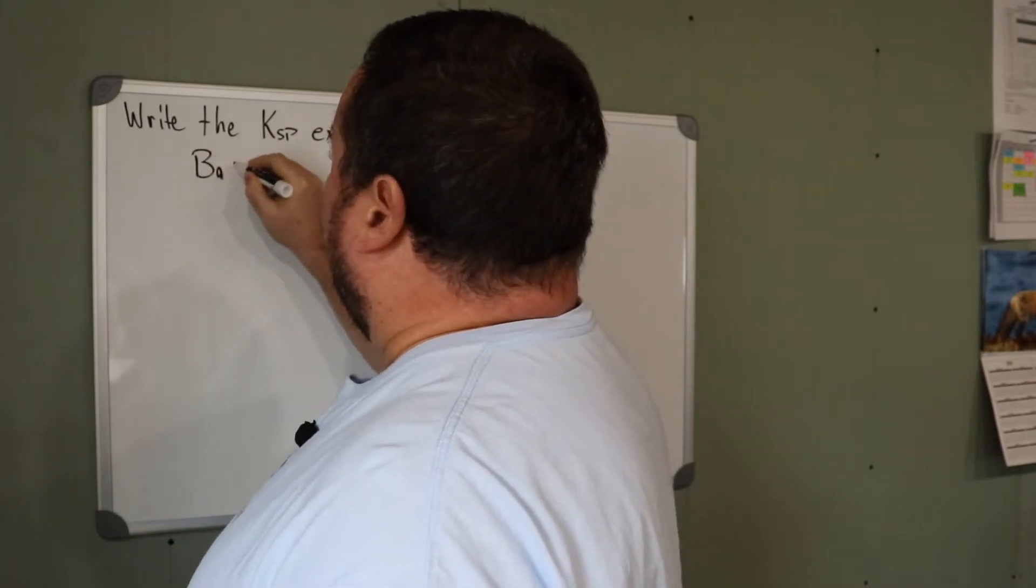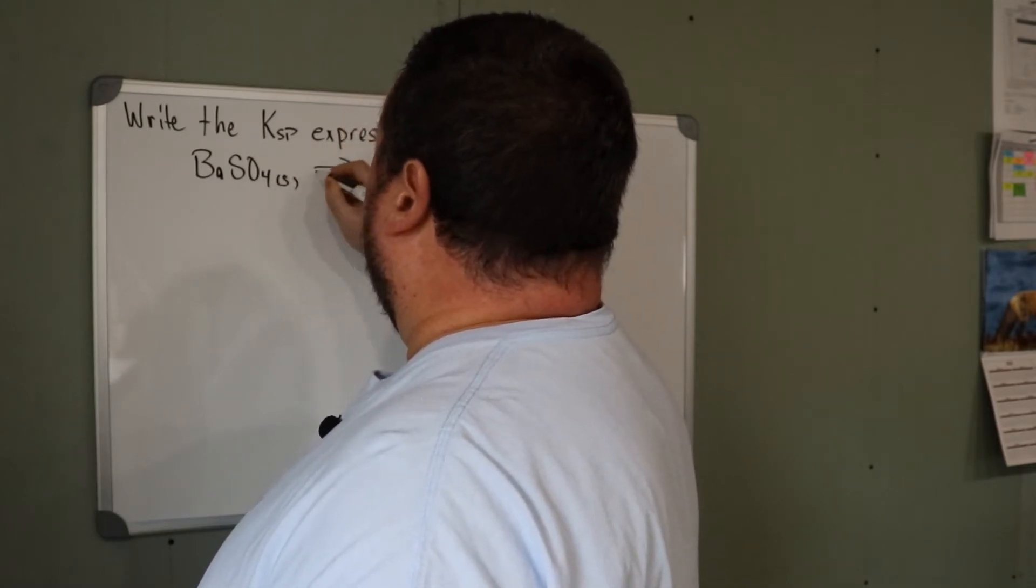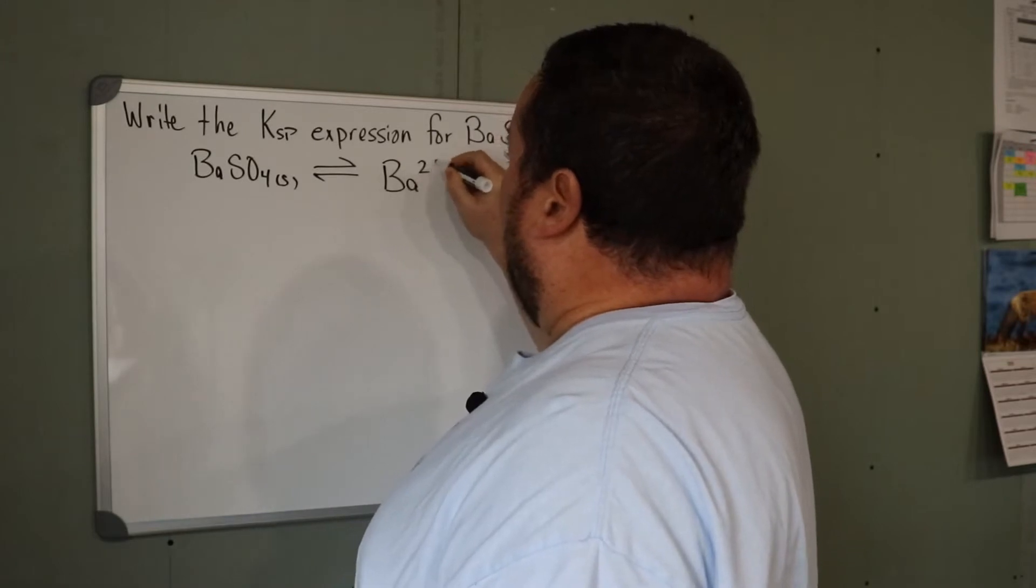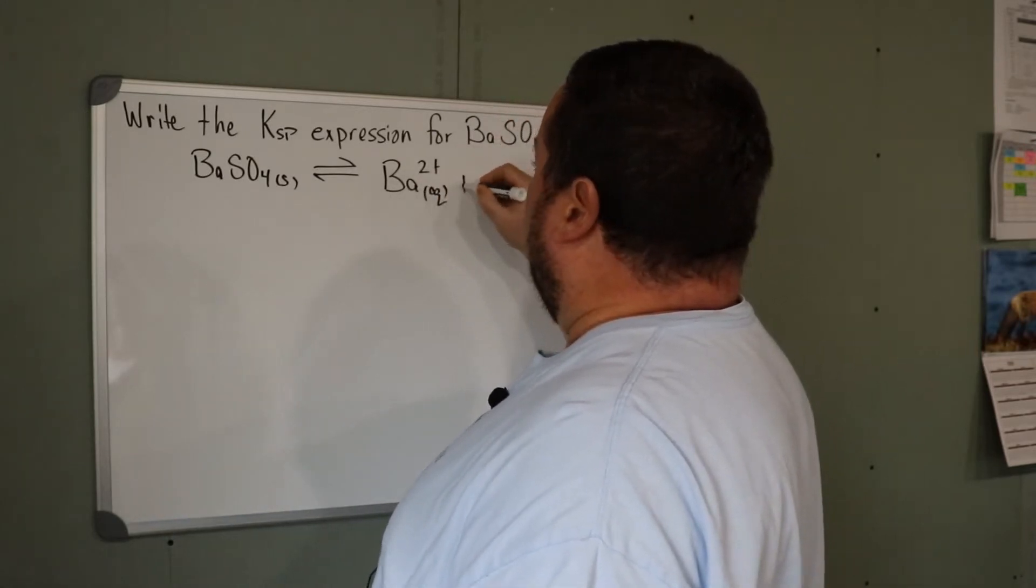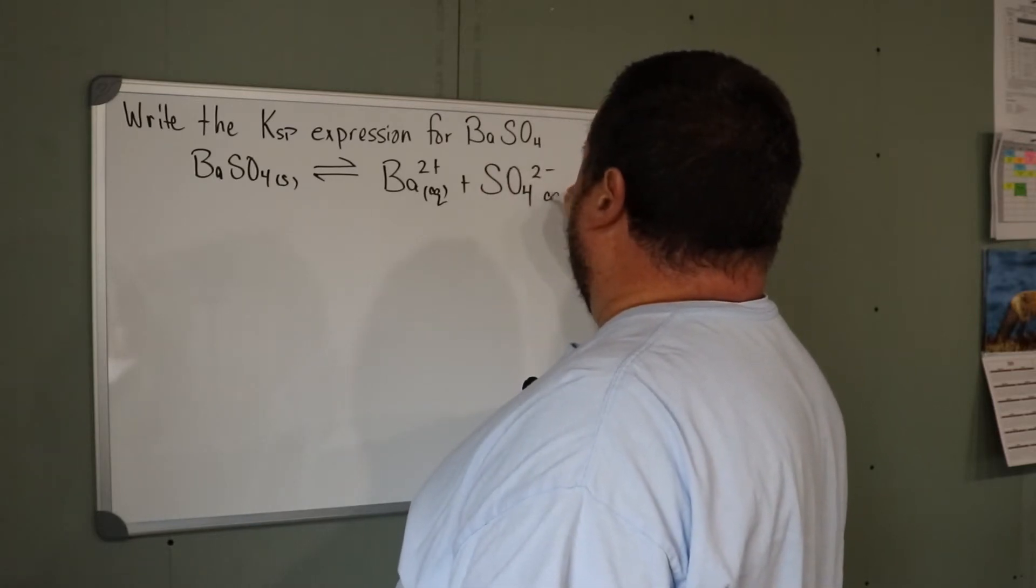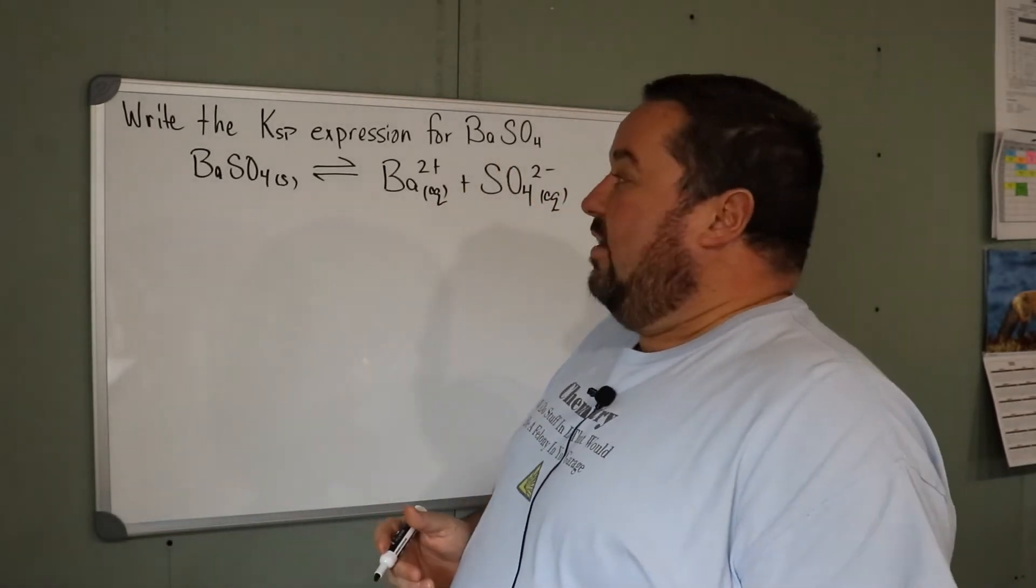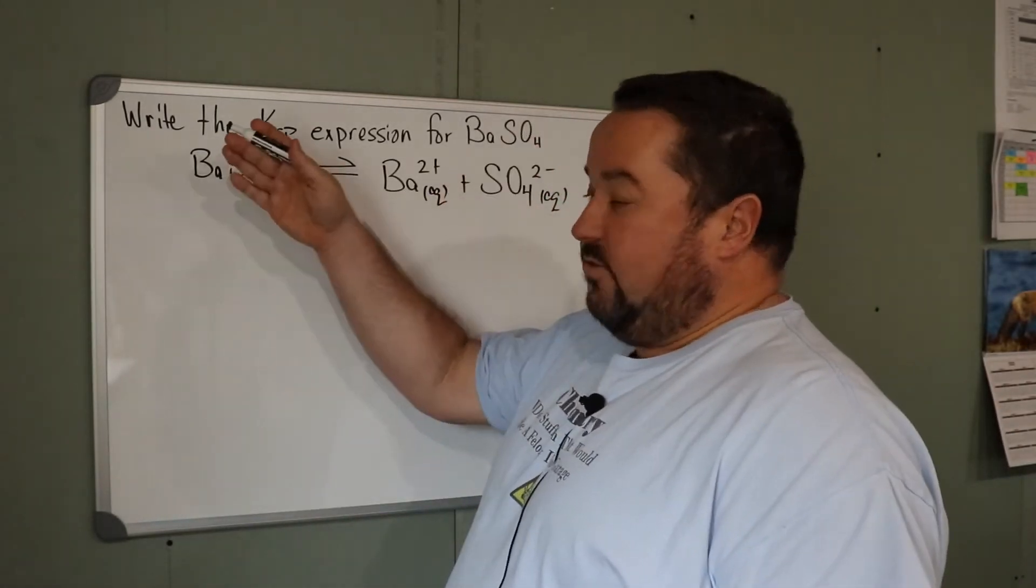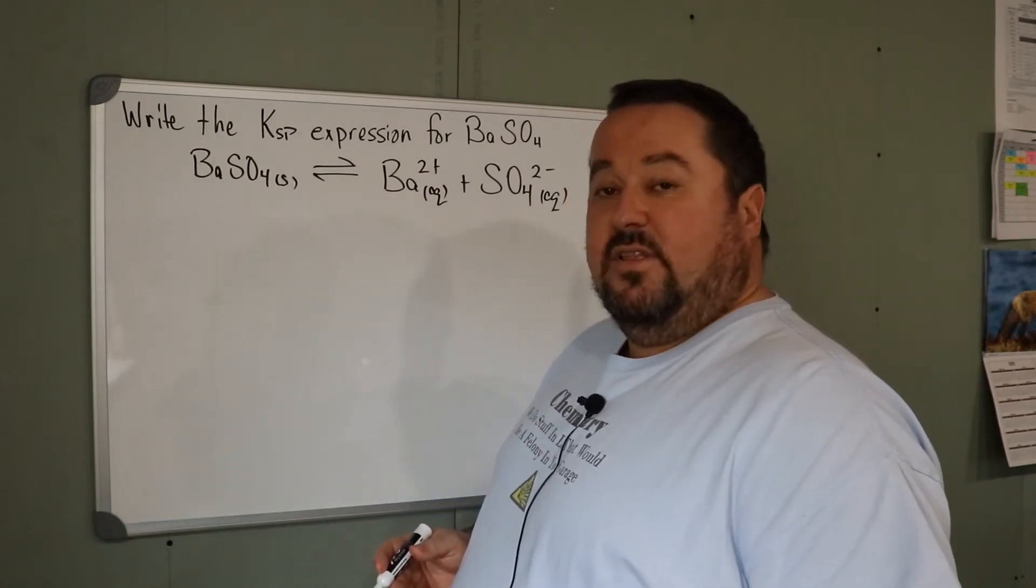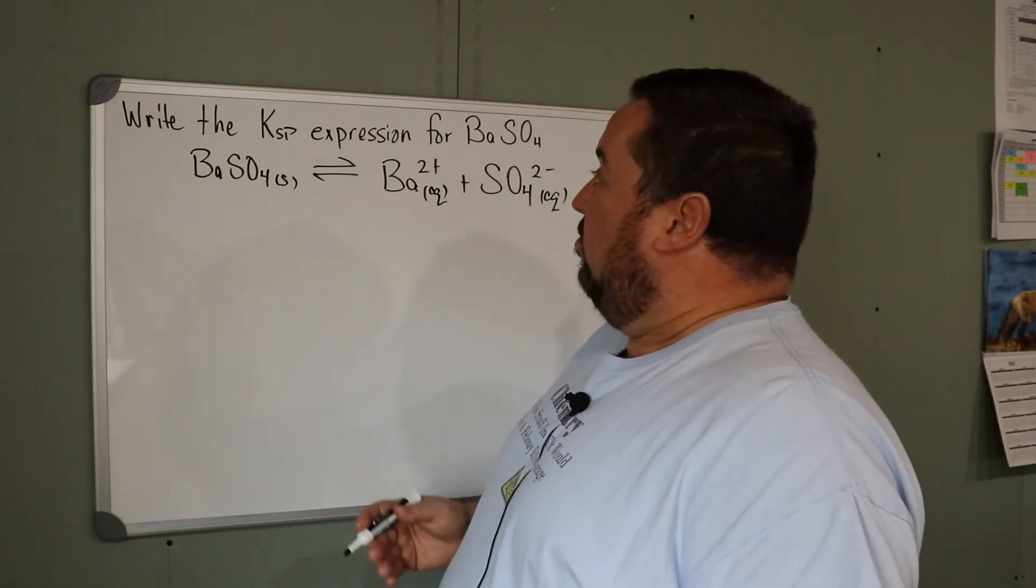Barium sulfate solid is in equilibrium with barium 2+ ion in solution and sulfate ion in solution. We know that these equilibria are for things that are quite insoluble. The equilibrium always lies strongly to the left. They will be very small numbers with very large negative exponents, but right now we're just writing the expression.